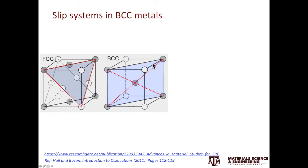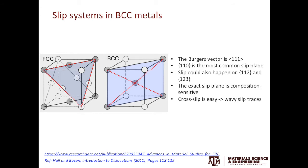For BCC metals, undergraduate textbooks teach that the most common slip system has dislocations gliding along the <111> direction on the {110} plane. However, in reality, it's more complicated. The {110} is indeed the most common slip plane, but dislocations can also glide on {112} and {123} planes in BCC metals.